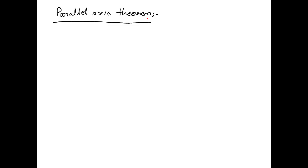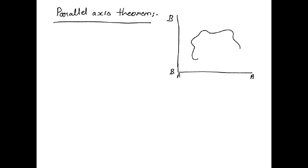In the parallel axis theorem, we consider a plane lamina. We are considering this horizontal axis as axis AA and the vertical axis as axis BB. We consider a plane lamina of area A. The center of gravity G of this lamina is at the intersection point of axis XX and axis YY.